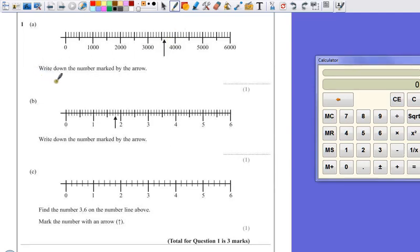Question 1a. Write down the number marked by the arrow. Very easy questions like this as long as you pay attention to what each little line on the scale means. So we've got from 3,000 to 4,000 with 10 little marks. So that means we're going up in hundreds.